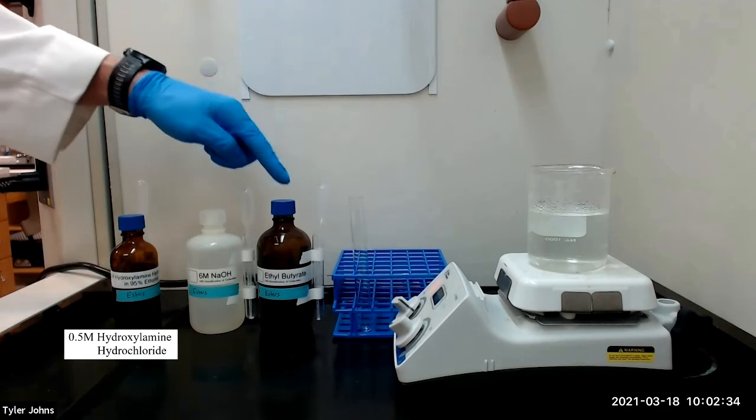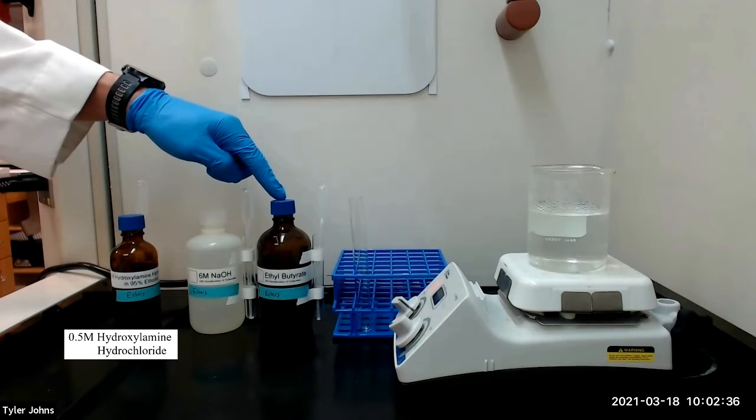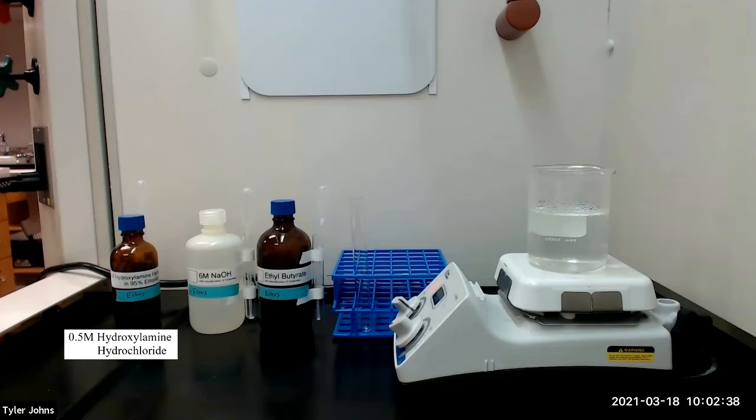Since our test compound ethyl butyrate did not show enolic character with the ferric chloride test, we may now continue with the ferric hydroximate test.